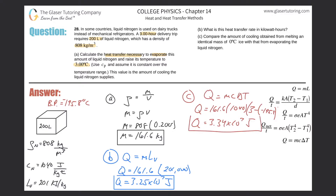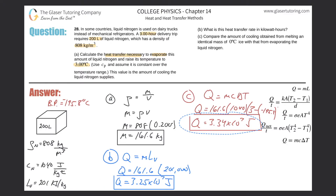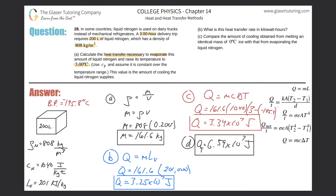The total heat transfer is the sum of the phase change energy and the sensible heating energy. Adding the two values together using exact figures gives approximately 6.59 × 10⁷ joules total. That is the complete answer for part a.